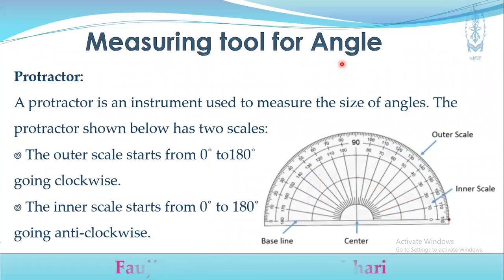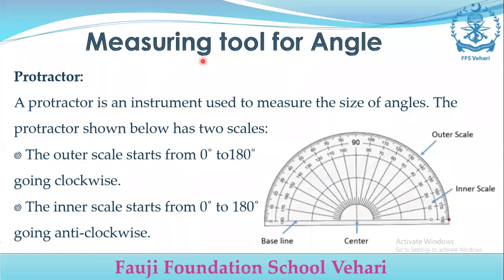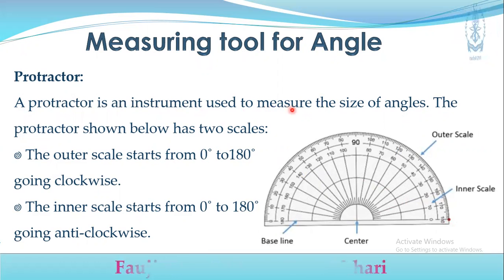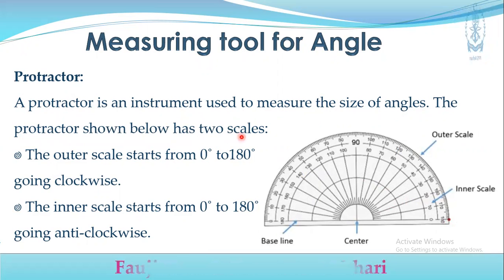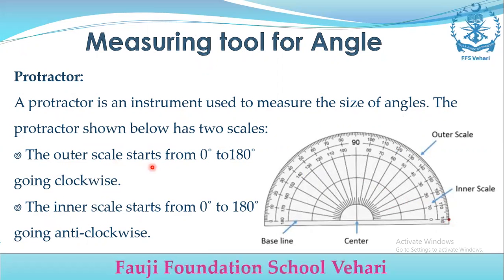We use a protractor to measure the size of angles. The protractor has two scales: one is the outer scale and one is the inner scale. The outer scale starts from 0 degrees to 180 degrees, going clockwise.